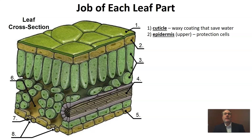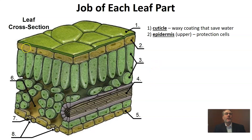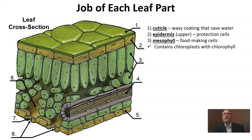The second thing we're going to look at is the first layer of cells starting at the top — the upper epidermis. The lower epidermis down here is going to have the same job, and this is really all about protection. Just like your skin protects your body, these epidermis cells on the plant leaf are also going to be protecting what's inside of the leaf — they're protection cells.